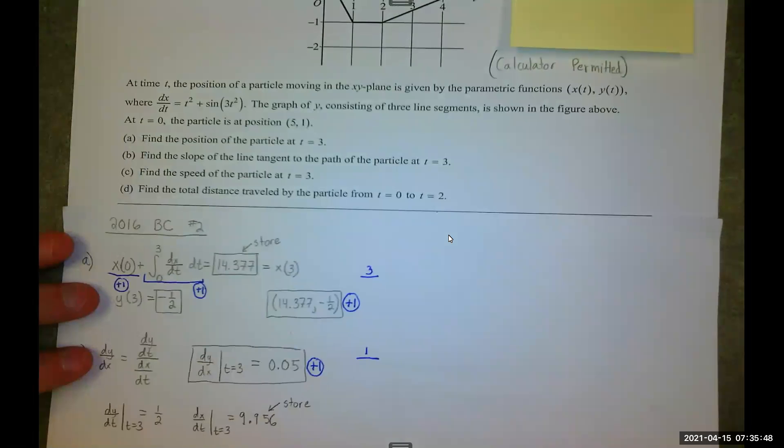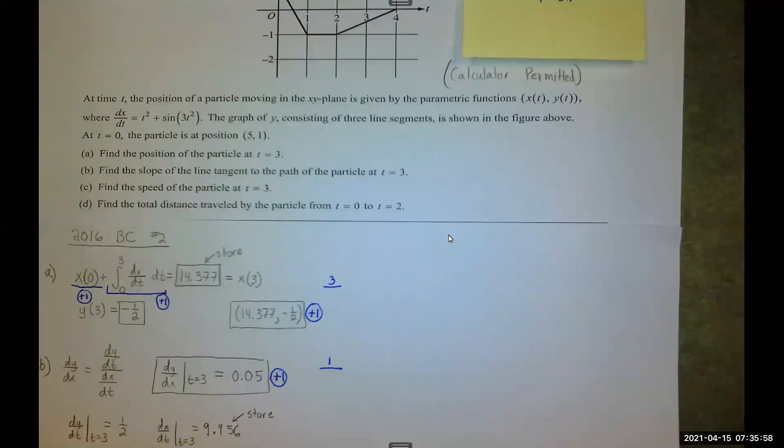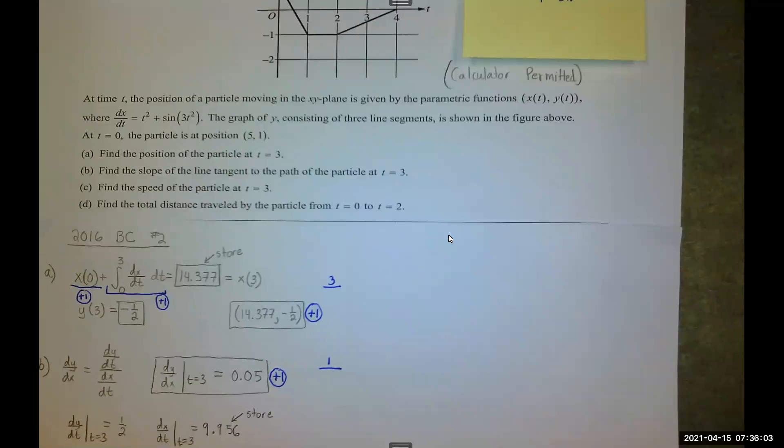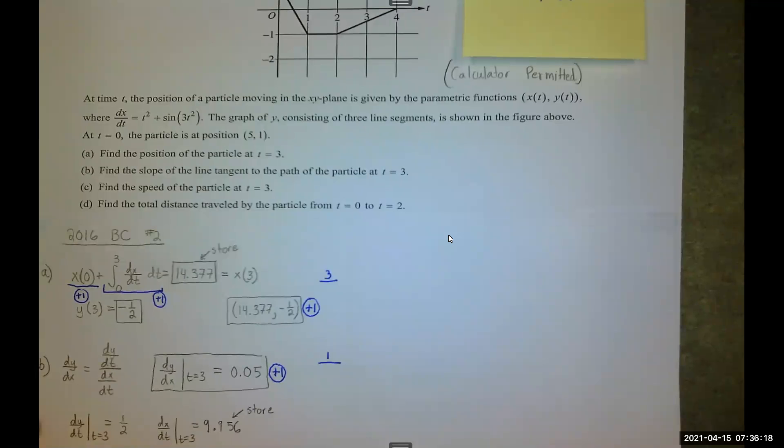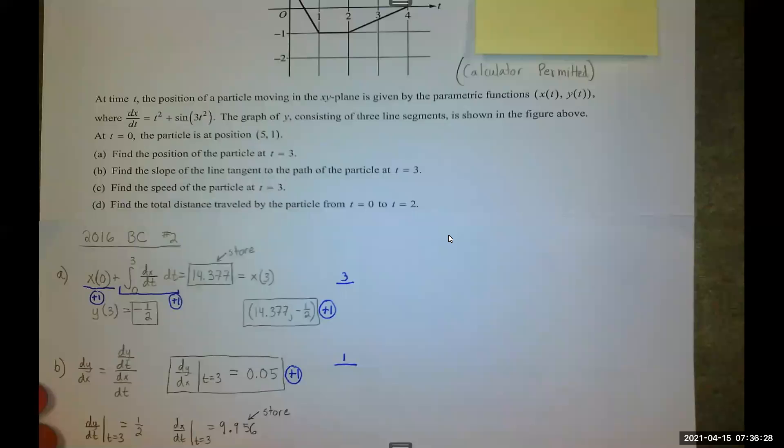Part A. Find the position of the particle at t equals 3. I need the horizontal and vertical position, which means I need to work with whatever information I have horizontally, be it acceleration, position, velocity, and vertically, acceleration, position, velocity, whatever I have. In this case, I have the velocity equation, the velocity function for the horizontal, for x, dx/dt. If I integrate that from 0 to 3, it tells me how far I traveled, but I'm interested in the position at 3, which means I need to know where I was at x equals 0. That information is given in the point 5 comma 1. So I add those two things together.